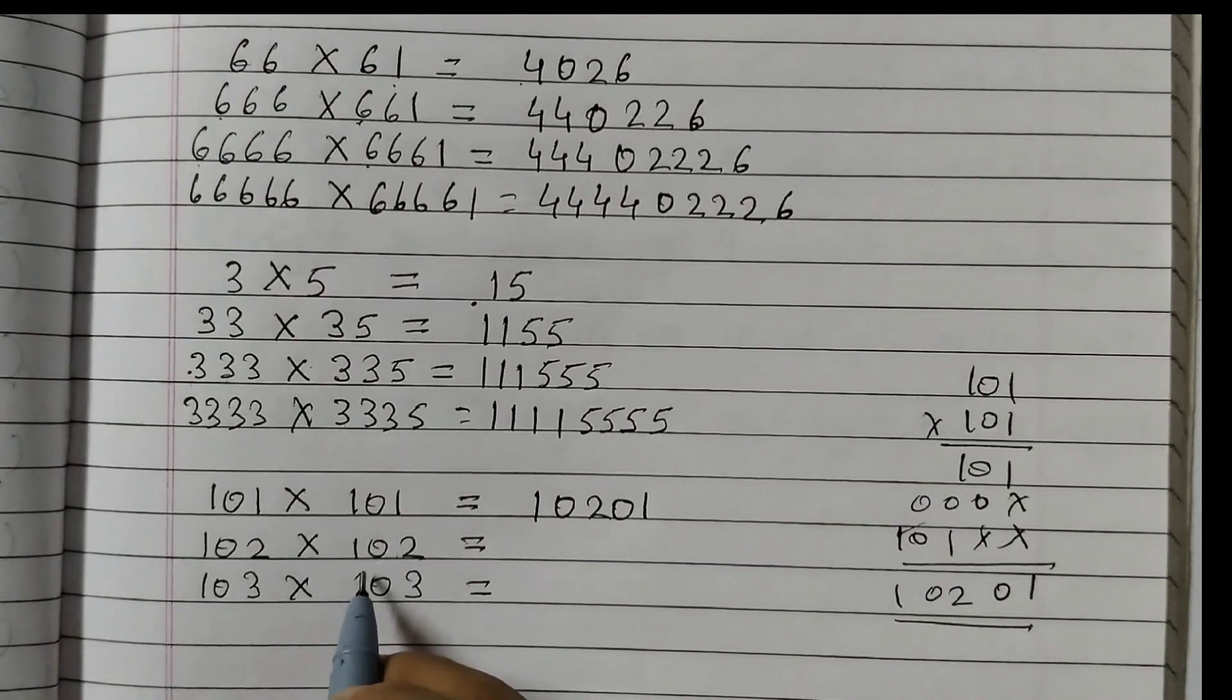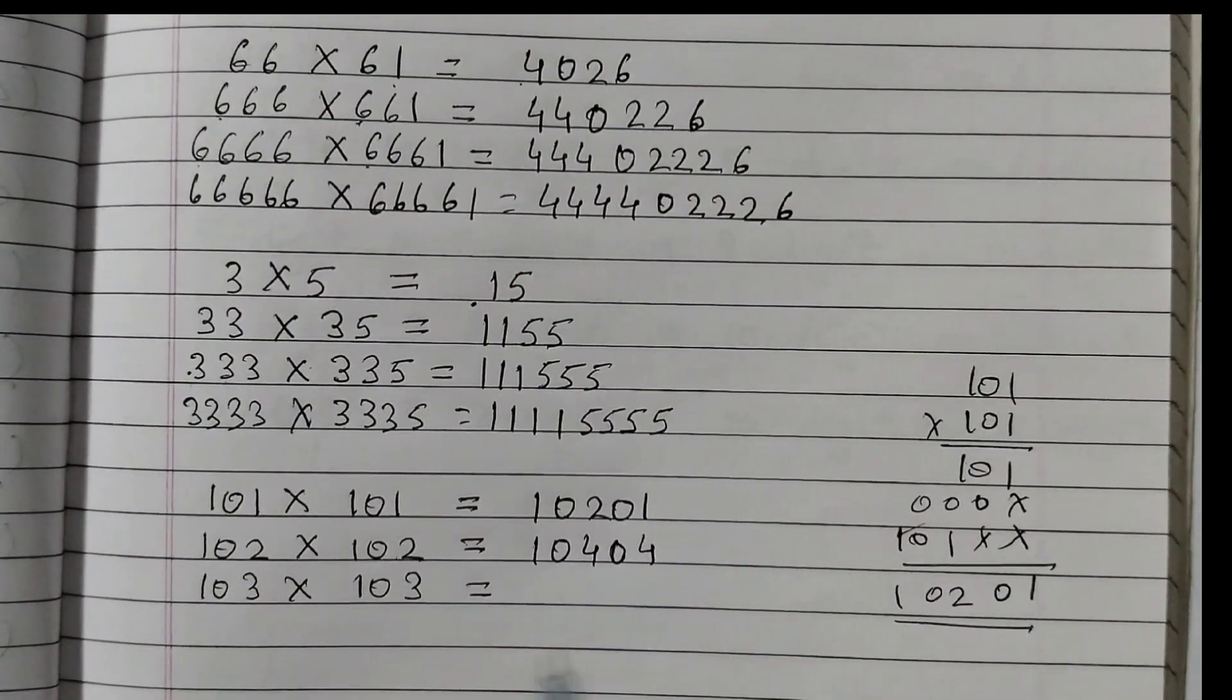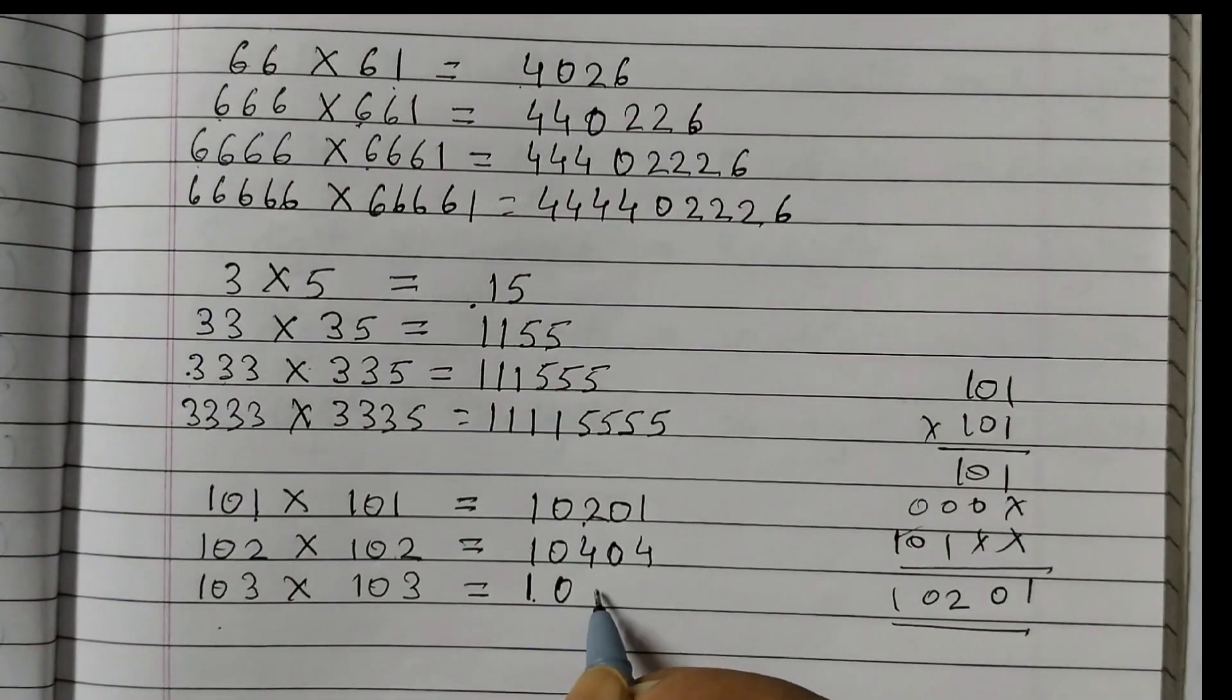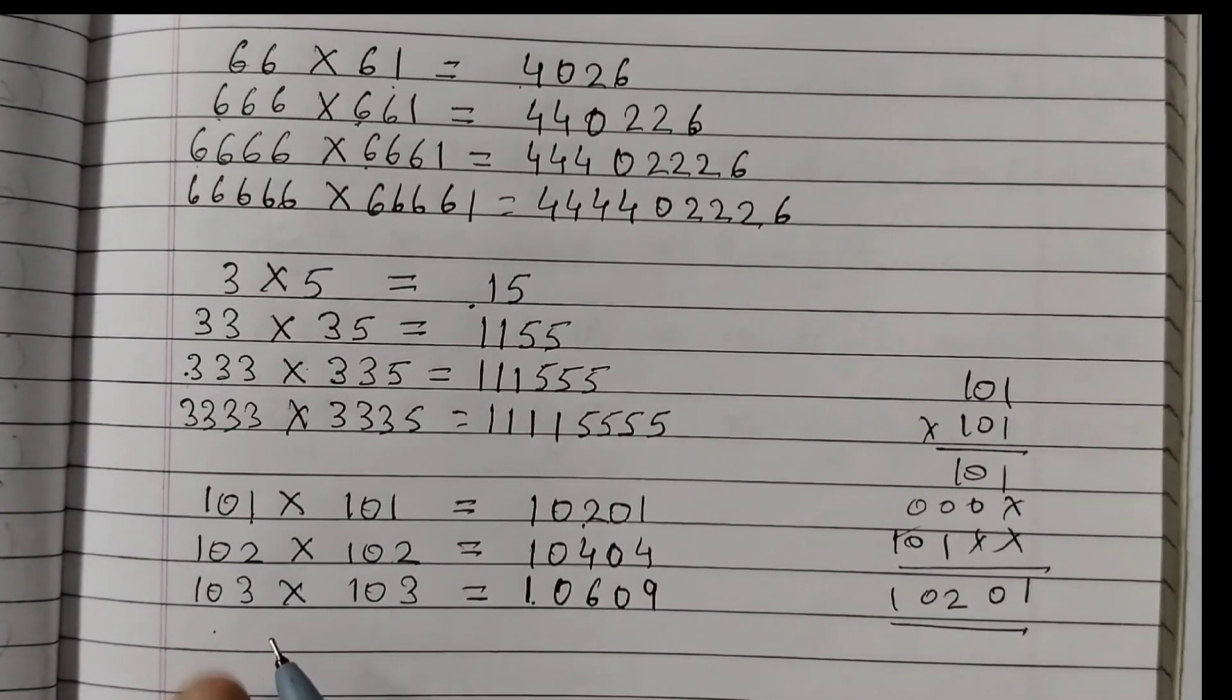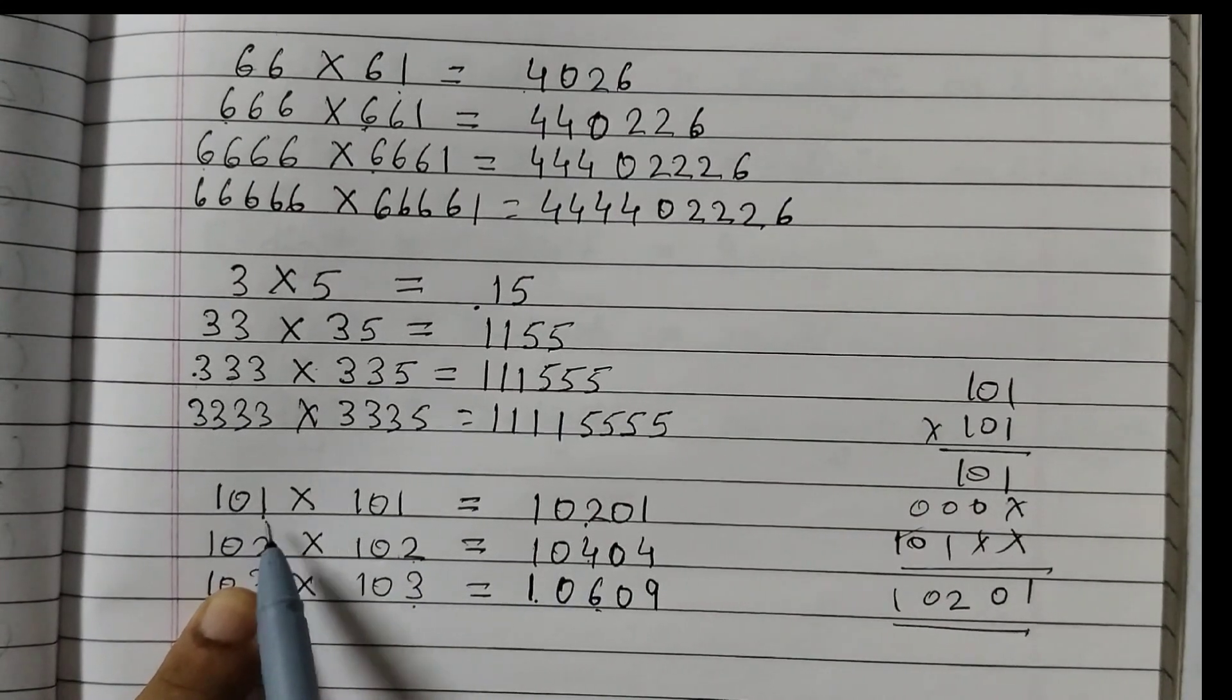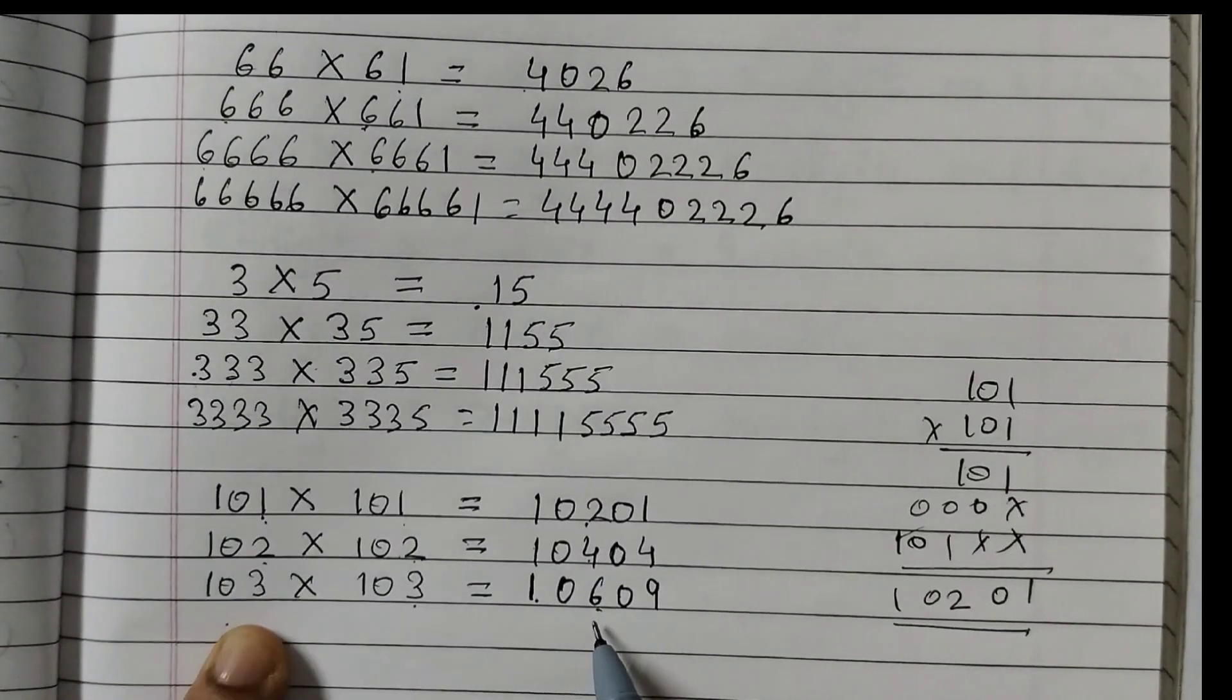So now when we do 102 into 102, we get 10404. 103 into 103. So what is the pattern here? It starts with 10609. Now what is the pattern here? If you see here, 3 plus 3 is 6. Right? 2 plus 2, 4. 1 plus 1, 2. So that means the middle number that we are getting is just by adding.